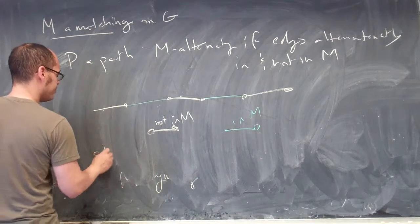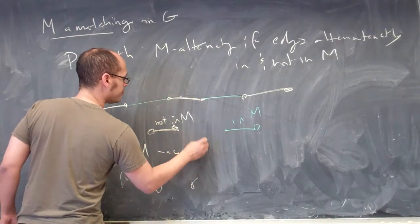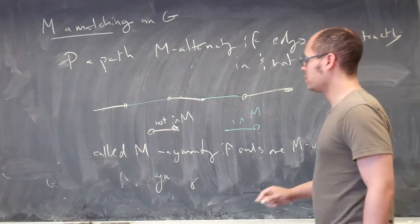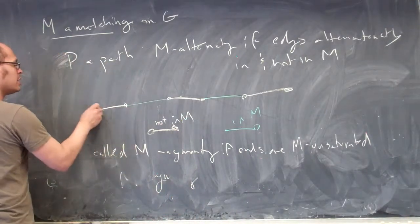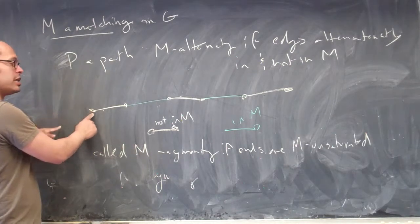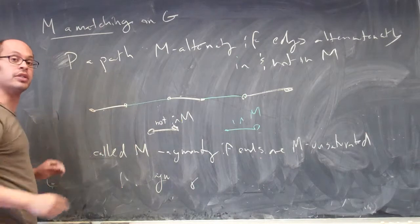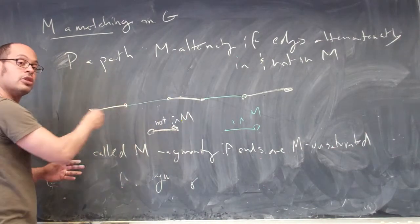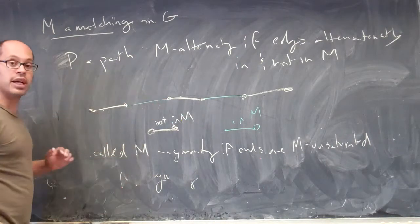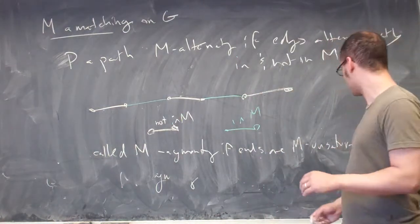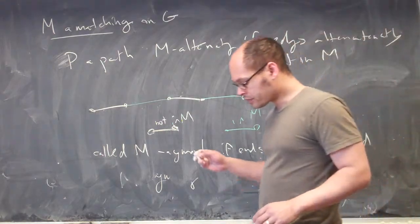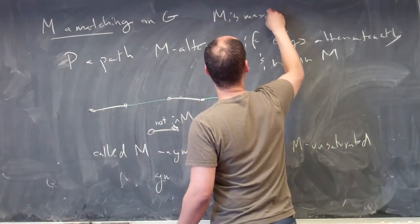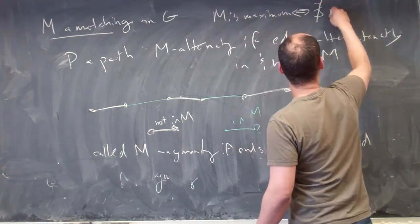A path is called M-augmenting if the ends are M-unsaturated. In this path, the last edges are not in M. If this vertex is not incident to any other edge in M, and that holds on both sides, this path is called M-augmenting. The main lemma we proved before is that M is maximum if and only if there exists no M-augmenting path.